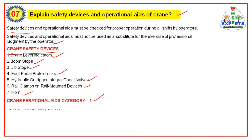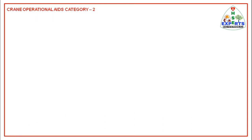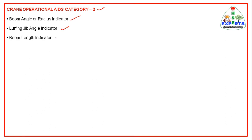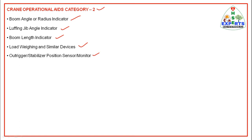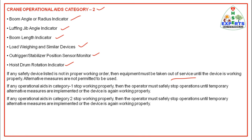Crane Operational Aids Category 1 include: Boom Hoist Limiting Device, Luffing Jib Limiting Device, and Anti-Two-Block Device. Crane Operational Aids Category 2 include: Boom Angle or Radius Indicator, Luffing Jib Angle Indicator, Boom Length Indicator, Load Weighing and Similar Devices, Outrigger Stabilizer Position Sensor Monitor, and Hoist Drum Rotation Indicator. If any safety device listed is not in proper working order, then the equipment must be taken out of service until the device is working properly. Alternative measures are not permitted to be used.